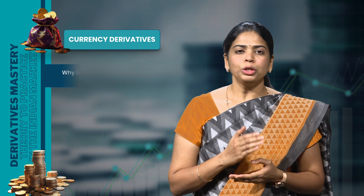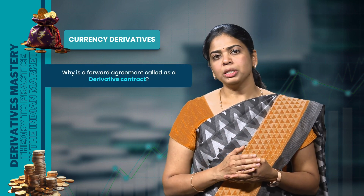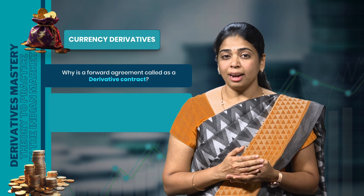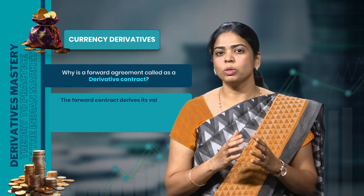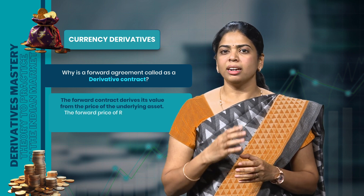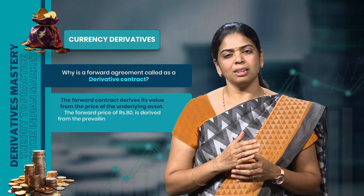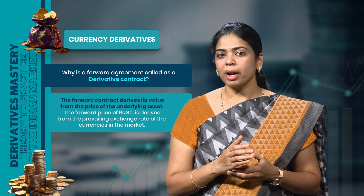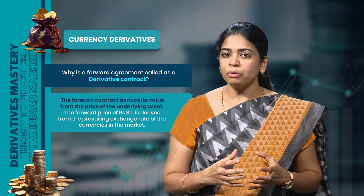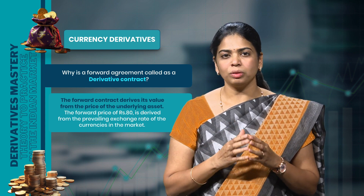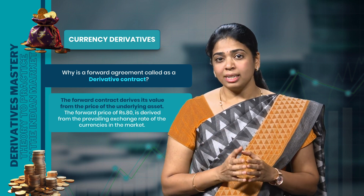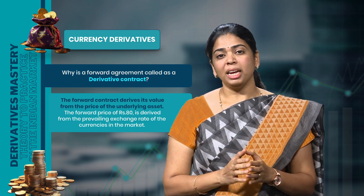So why is a forward agreement called a derivative contract? The reason is that the forward contract derives its value from the price of the underlying asset. In this example, the underlying asset is the currency. The forward price of Rs.80 in our example is derived from the prevailing exchange rate of the currencies in the market. So based on the underlying asset, derivatives can be named differently.